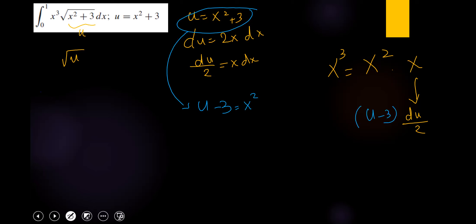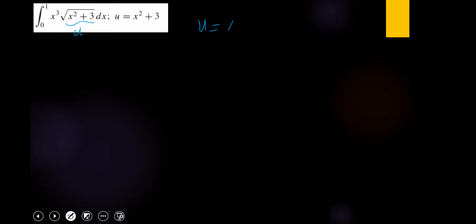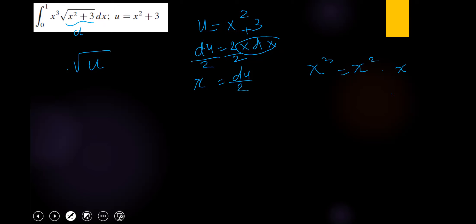Let's replace everything now: u minus 3 times the square root of u. Since u equals x squared plus 3, x squared equals u minus 3, and x equals du over 2. So one of the x's becomes du over 2, and x squared becomes u minus 3.